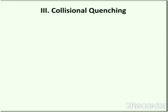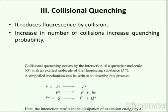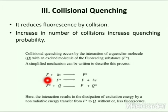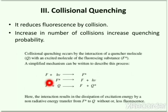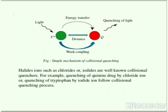The third type is collisional quenching, which occurs by the interaction of a quenching molecule with an excited molecule of the fluorescent substance. In the mechanism, F denotes the fluorescent substance, F* is its excited state, hν is energy where h is Planck's constant and ν is the frequency of radiation, and Q is the quenching molecule. When the excited fluorescent molecule interacts with the quencher, it results in a decrease of excitation energy by non-radiative energy transfer from F* to Q, resulting in less or no fluorescence. For example, quenching of quinine by chloride ion or quenching of tryptophan by iodide ion follow collisional quenching.